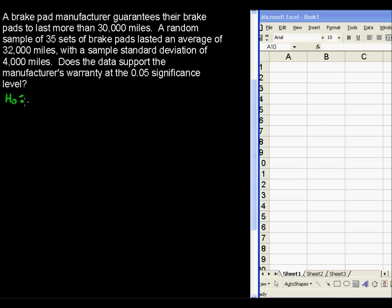So our null hypothesis is the mean is equal to 30,000 miles, or of course some books like to say less than or equal to, which is going to be the opposite of the alternative hypothesis.